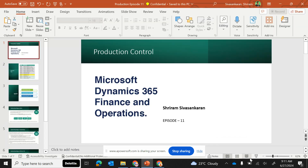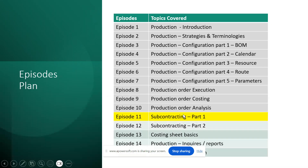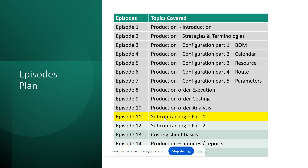We are in episode number 11, and the agenda is to cover the subcontracting process. We will also cover it in episode number 12, during which we will cover subcontracting using a BOM journal, because in some industries BOM journals are used to perform subcontracting. In this episode, we will see how to use the subcontracting process by adding the item in the BOM and in the operation, so that appropriate purchase orders can be generated.